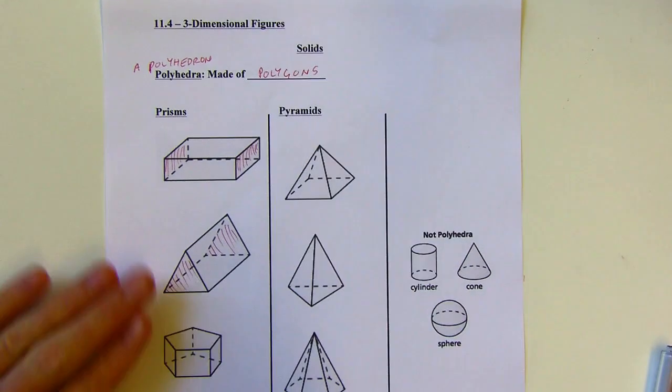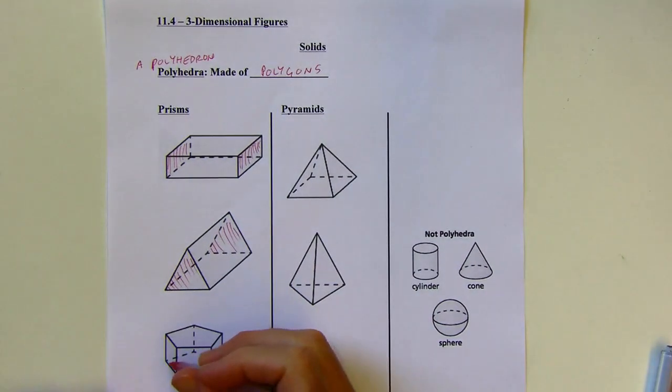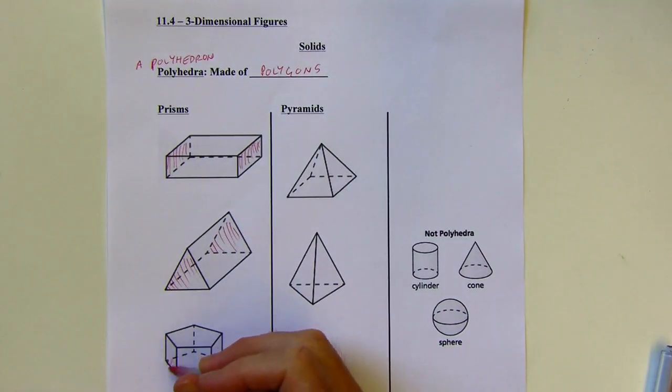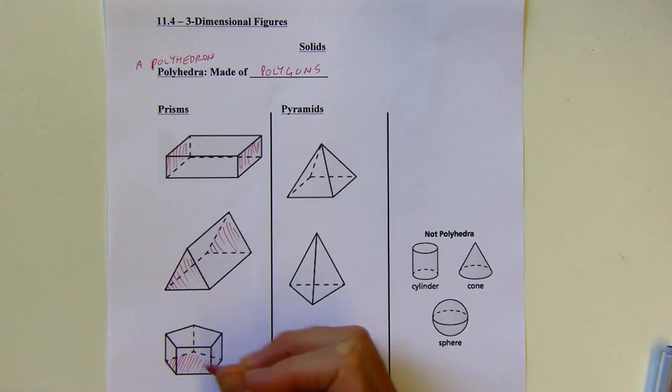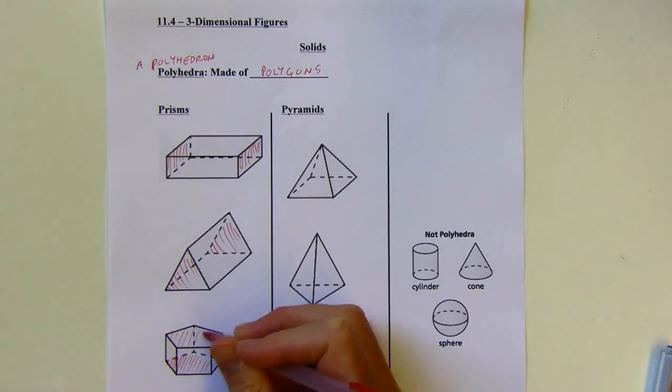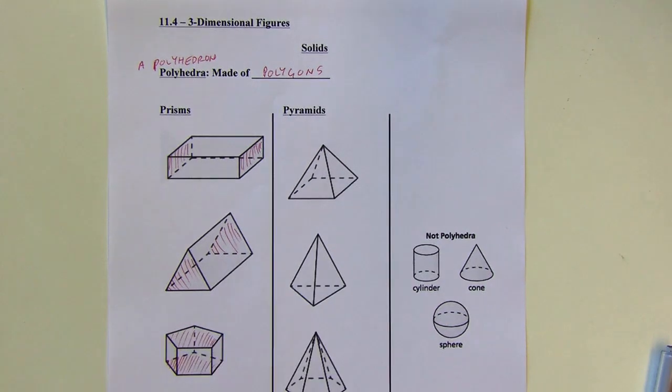And with this last one, I could cut this like a stack of pancakes and give everyone a pentagon shaped pancake that's the same size. So those are all prisms.